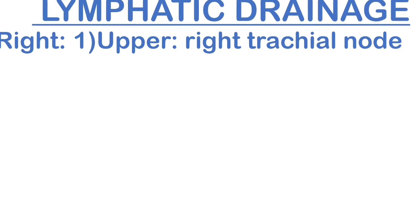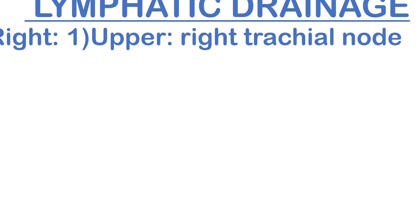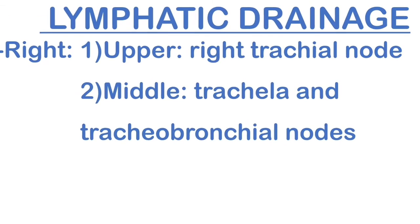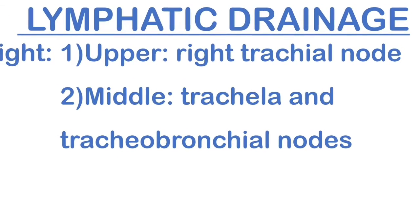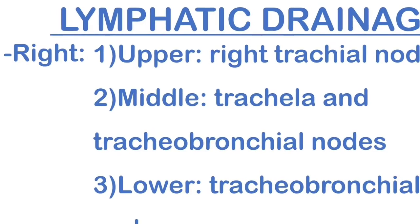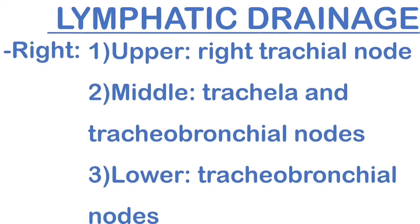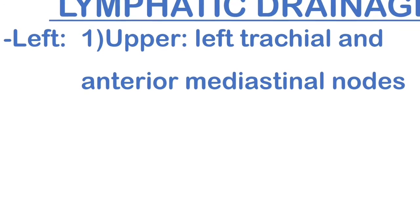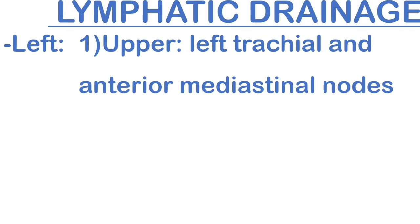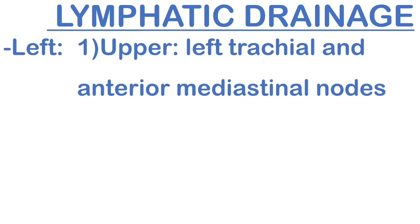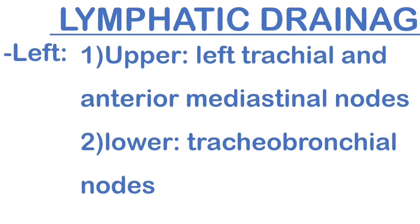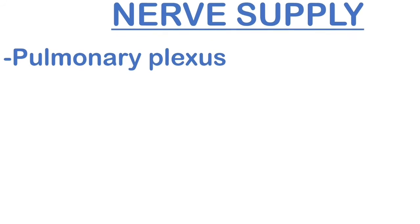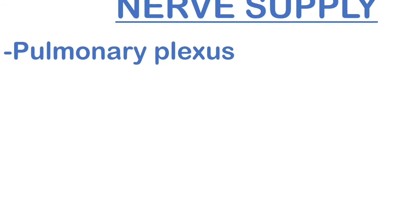Now let's discuss the lymphatic drainage of the lungs, which occurs via lymph nodes. In the right lung: the upper is the right tracheal node, the middle is the tracheal and tracheobronchial nodes, and the lower is the tracheobronchial nodes. In the left lung there are two portions — the upper portion drains to the left tracheal and anterior sternal nodes, and the lower to the tracheobronchial nodes.